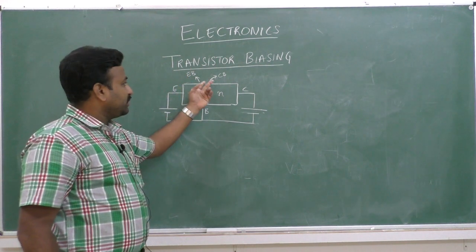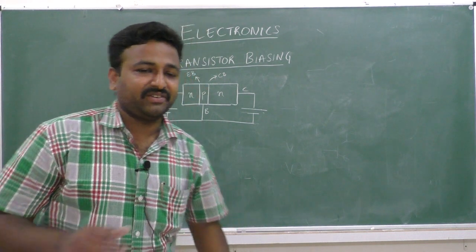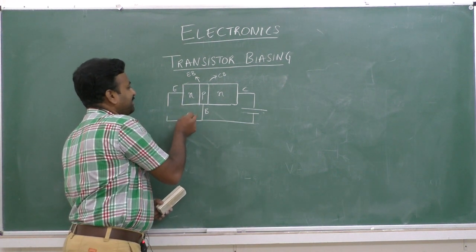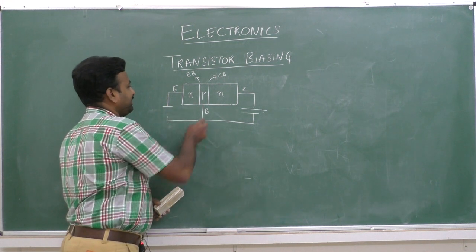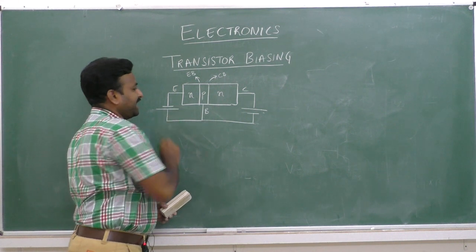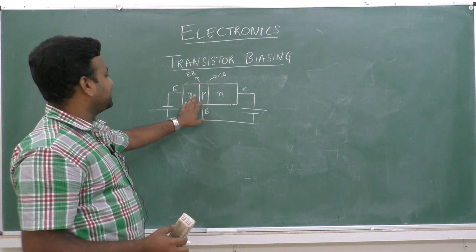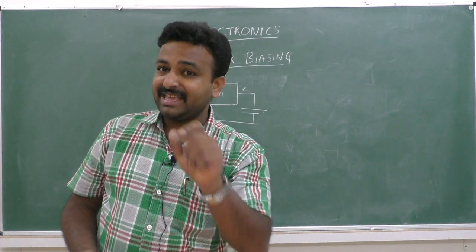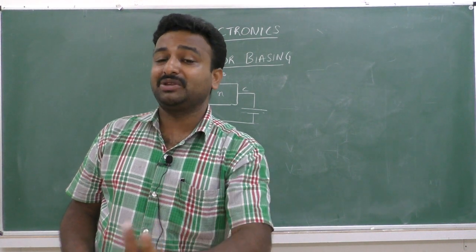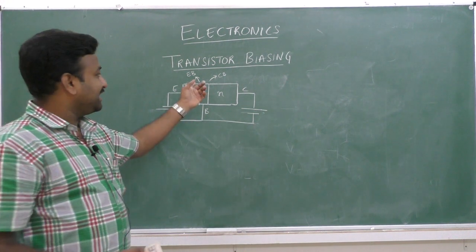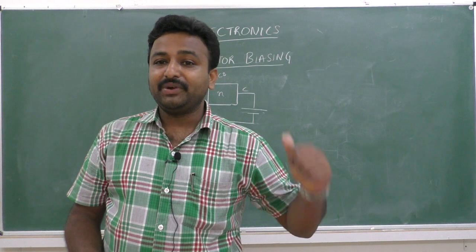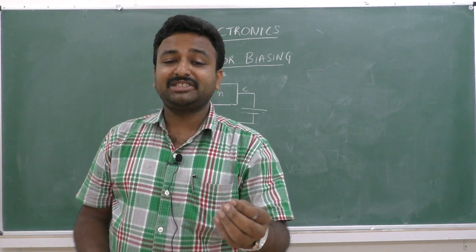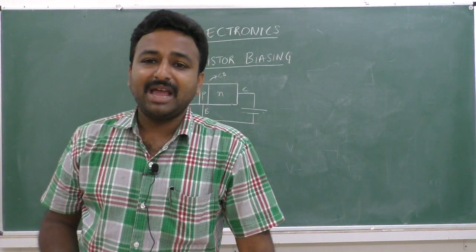When the emitter-base junction is forward biased and the collector-base junction is reverse biased, this is called active mode. In active mode, the transistor behaves as an amplifier. If a weak input signal is given, the transistor amplifies it and gives a stronger output signal.